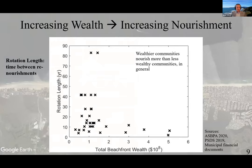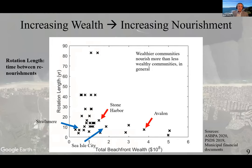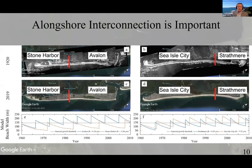From community-scale nourishment and socioeconomic data in New Jersey, I found that a community's rotation length decreases, or its nourishment frequency increases, as its beachfront wealth increases. Variability in this relationship could be explained in part by the wealth and nourishment choices in neighboring communities. For instance, looking at two pairs of neighboring communities in southern New Jersey — Avalon and Stone Harbor, and Strathmere and Sea Isle City — Avalon and Stone Harbor are spaced farther apart than Strathmere and Sea Isle City, as evidenced by their scale bars in the imagery. This alongshore effect manifests in their beach widths, where Avalon and Stone Harbor's morphodynamics are more decoupled, and Strathmere and Sea Isle City experience more interconnected beach morphodynamics, highlighting the importance of alongshore connectivity in nourishment policy development.